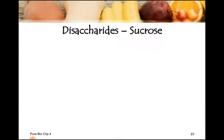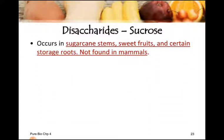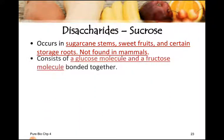The next example is sucrose, also a disaccharide. Sucrose occurs in sugarcane stem, sweet fruits, and certain storage roots such as beetroot and sweet potato. However, this compound is not found in mammals — sucrose does not exist in mammals.